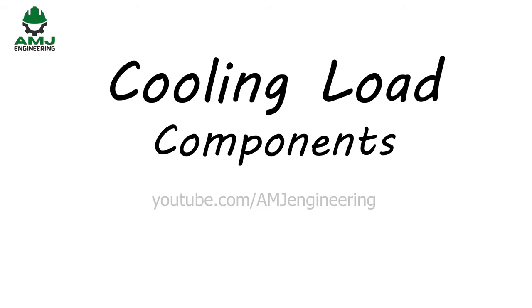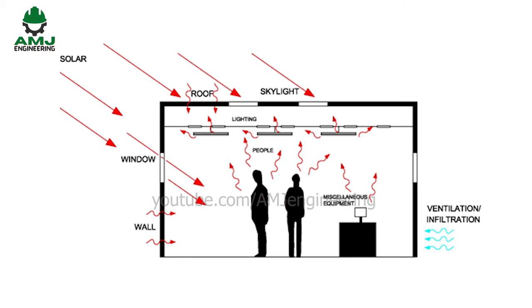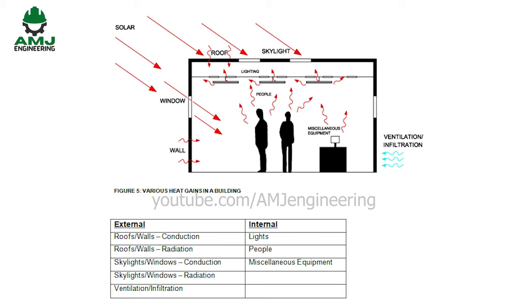First, let us indicate the various components that constitute the cooling load on a building. We have two types of heat gains: external and internal. External heat gains result from heat transfer by conduction through walls, roof, floor, and doors, and by radiation through fenestration such as windows and skylights — all sensible. Additionally, heat gain due to ventilation and infiltration includes both sensible and latent components. Internal heat gains come from occupants, products, processes, appliances, lighting, and other equipment.